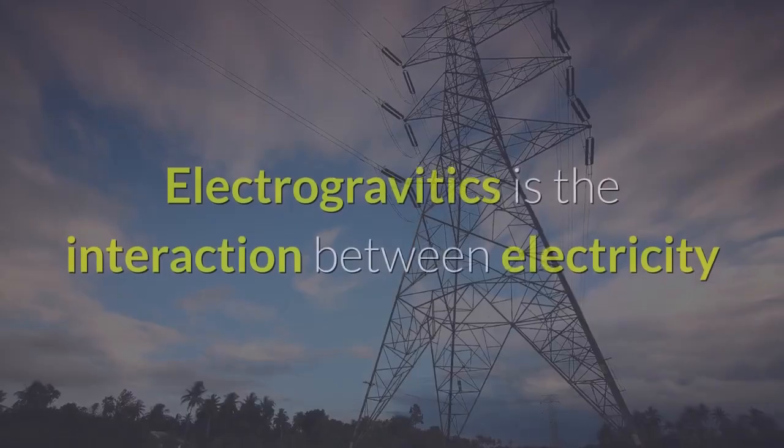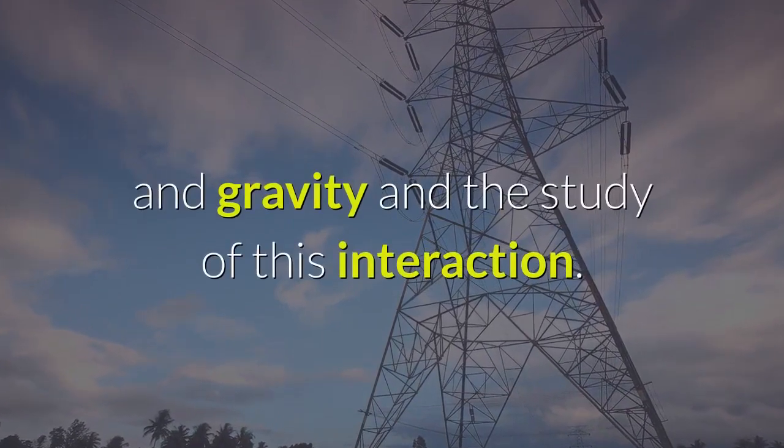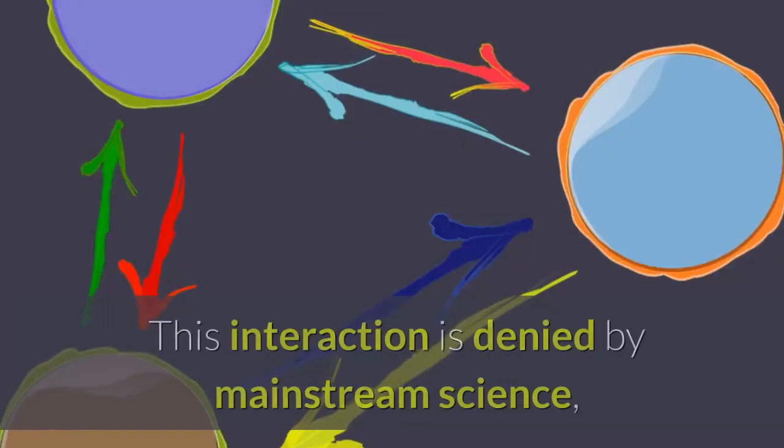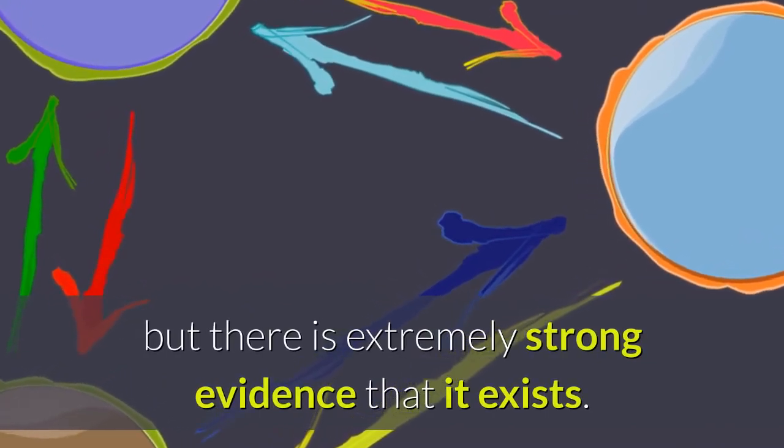What is Electrogravitics? Electrogravitics is the interaction between electricity and gravity and the study of this interaction. This interaction is denied by mainstream science, but there is extremely strong evidence that it exists.